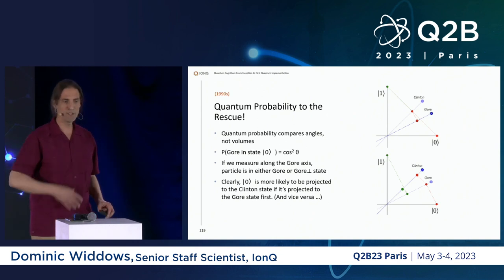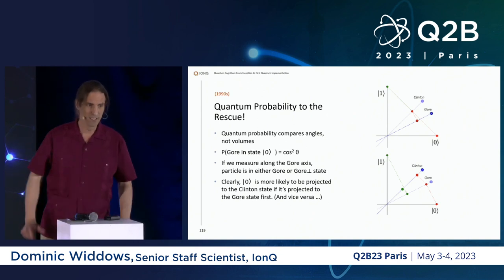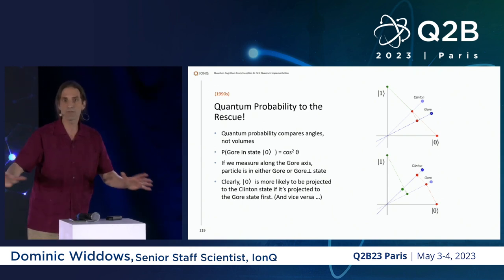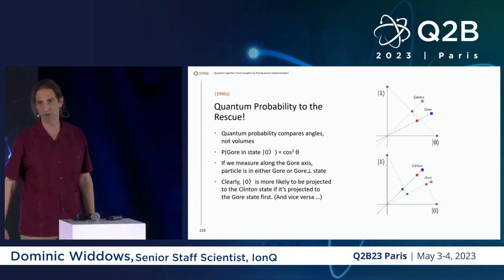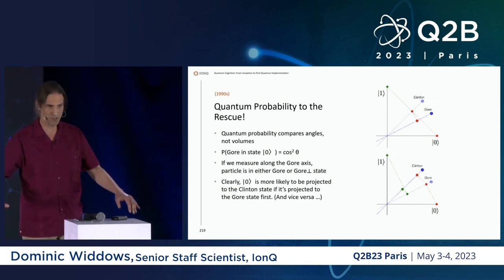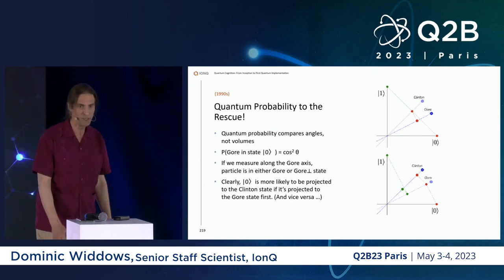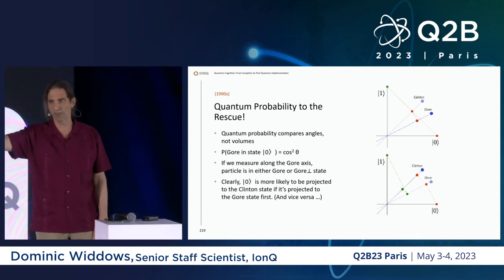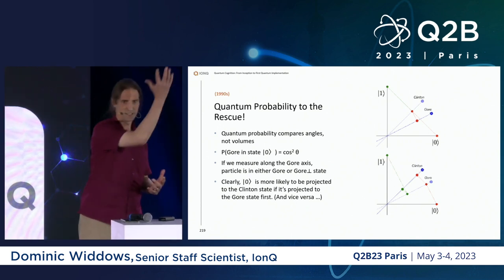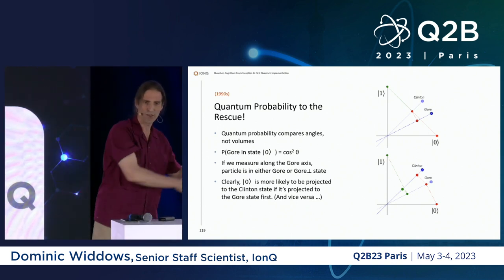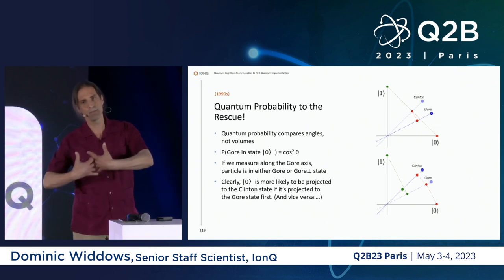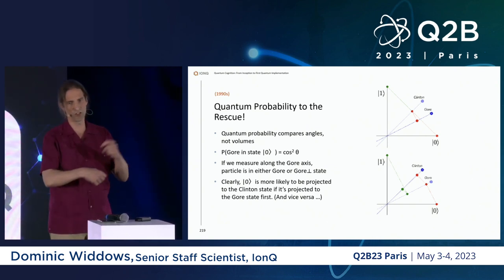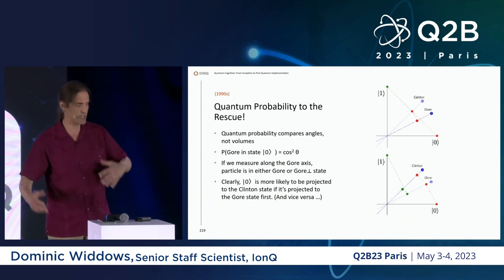In the 1990s and onward, quantum probability came to the rescue — one of several ways of addressing this problem. You can also solve it by writing an artificial if-then-else clause around a classical set theory model, but the question is how to model it without just filling everything with conditionals to fix the answers we got.